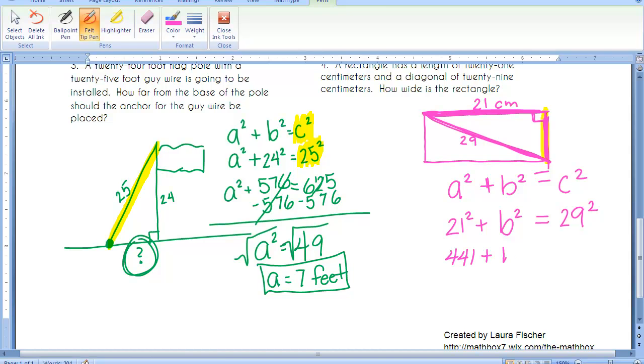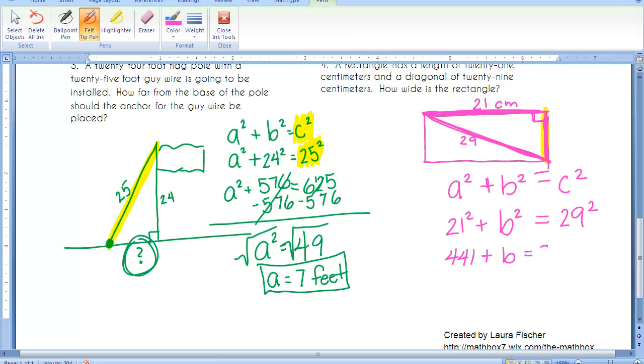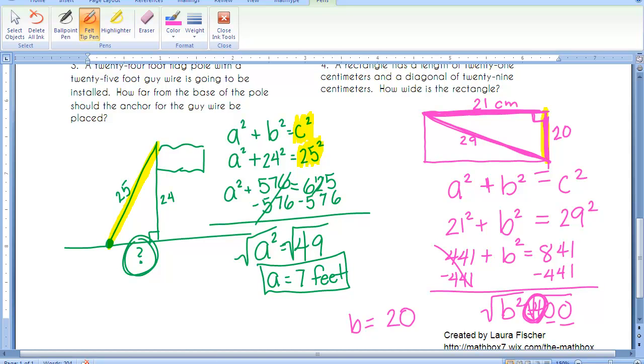Plus B squared. And 29 squared is 841. And again, because it's the leg that's missing, we have an extra step where we have to rearrange the equation somewhat. The square root of 400. Now, don't rush right to your calculator to do this. The square root of 4 is 2. This 4 right here. There's two zeros here, so I'm just going to take one of them off. And I'm going to get 20. So the width of this rectangle is 20 centimeters.